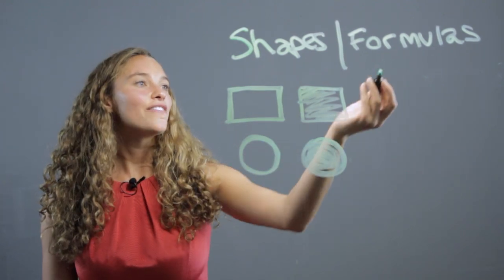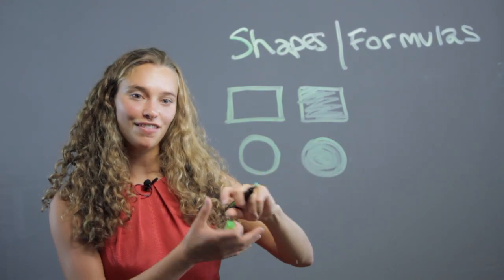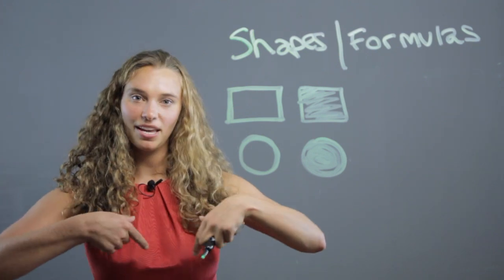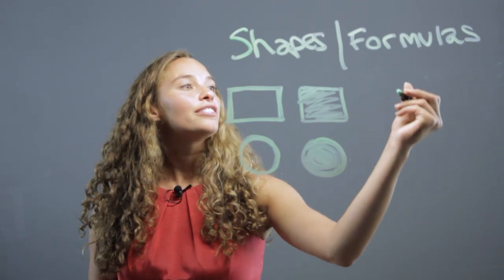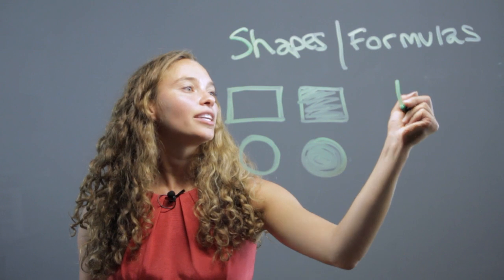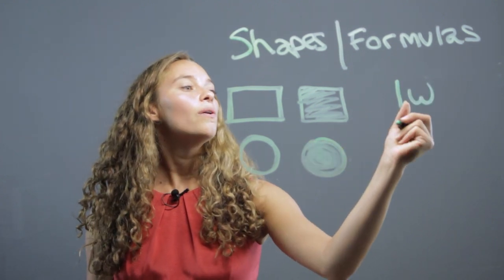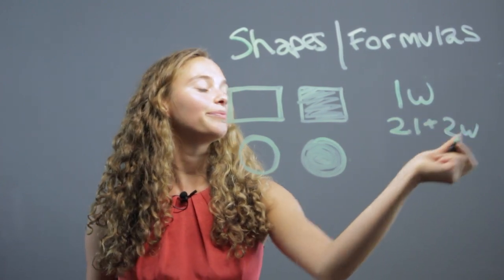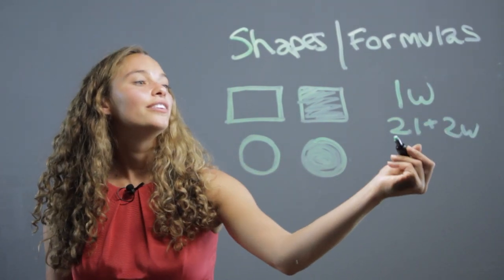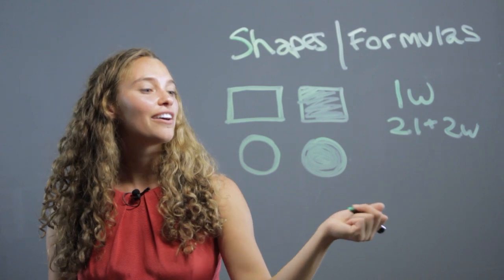Then you can have students that have formulas, give them a little index card or they can pin it on their t-shirt or something. So they'll have a formula like LW for area of a rectangle, or they could have 2L plus 2W written on their index card, the perimeter of the rectangle.